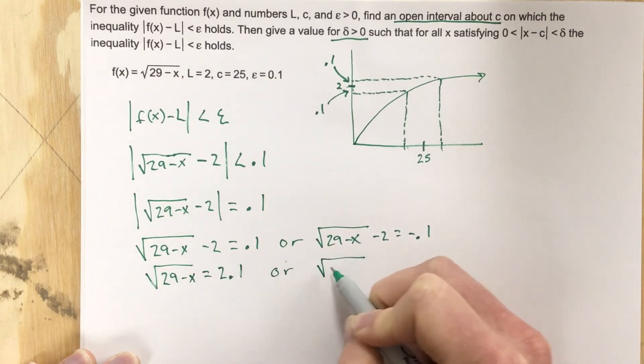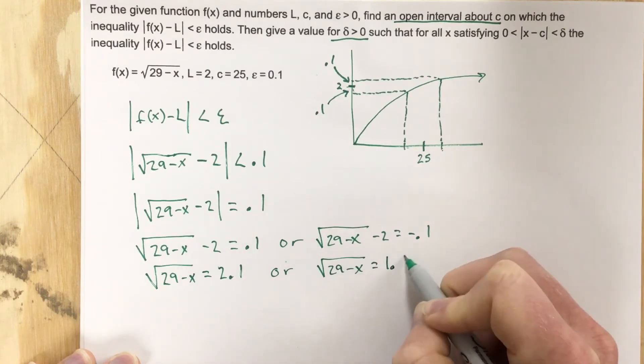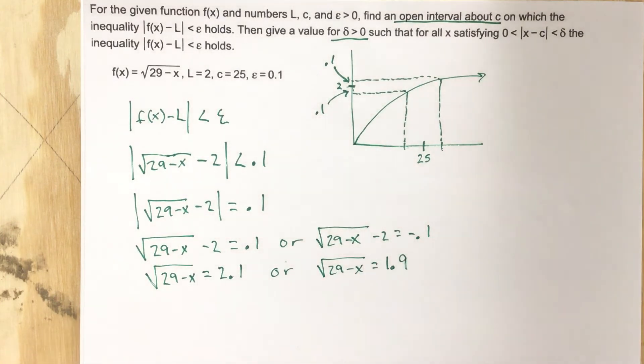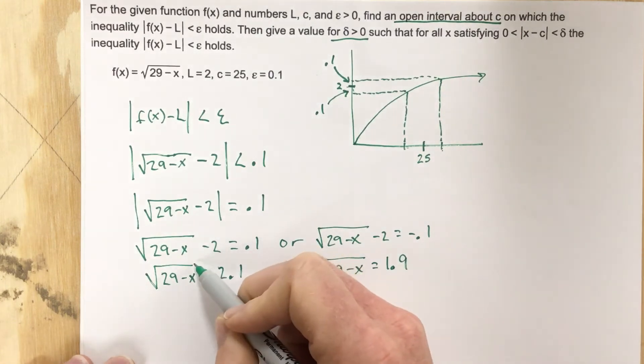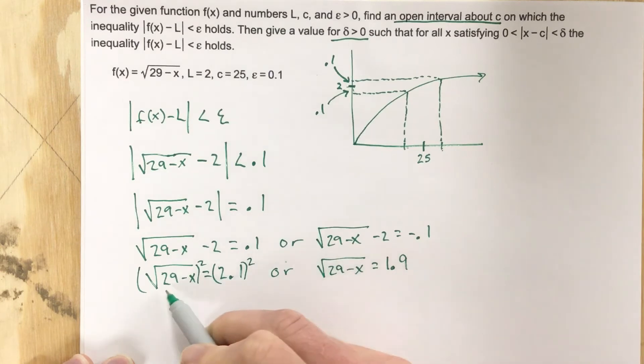or √(29-x) = 1.9, when you add the 2 over. So now we're going to square each side, so let's square the left side and the right side. When we square the left side,